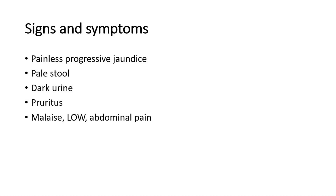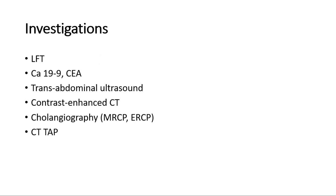If we are suspecting cholangiocarcinoma or the patient presents with painless progressive jaundice, these are the investigations we can do. Blood tests such as liver function tests — we expect a rise in ALP and GGT since the bile ducts are involved. Tumor markers such as CA 19-9 or CEA can also be elevated, however they are not specific, as CA 19-9 can also increase in pancreatic cancer, colorectal cancer, gastric cancer, gynecological cancers, and cholangitis. CEA is primarily a tumor marker for colorectal cancer but can also be used in cholangiocarcinoma workup.